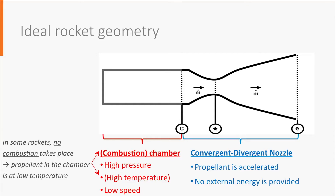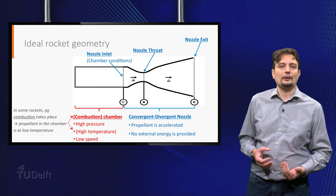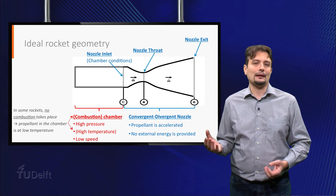We can highlight three particularly important nozzle sections, for which we will use three different subscripts. The inlet section, denoted by C, where the propellant is assumed to be at the same conditions as the combustion chamber. The nozzle throat, denoted by an asterisk, which is the smallest section at the end of the convergent and the inlet of the divergent. And the nozzle exit, denoted by E. One very important geometrical parameter of the nozzle is the expansion ratio, defined as the ratio of the exit area to the throat area.